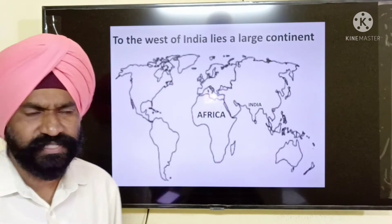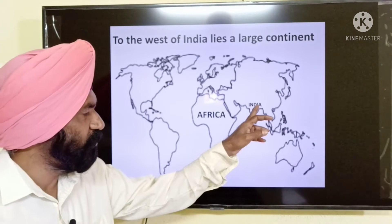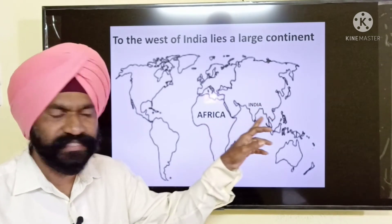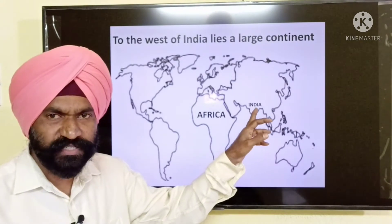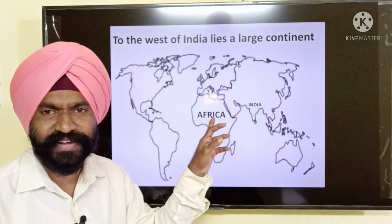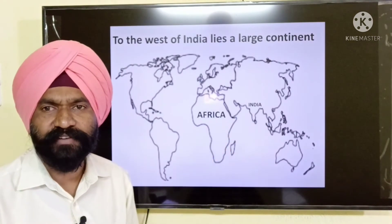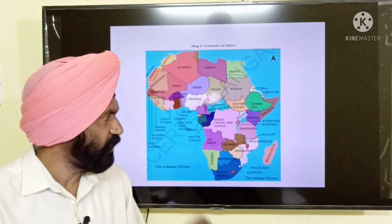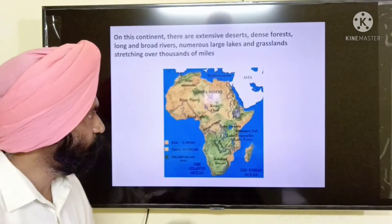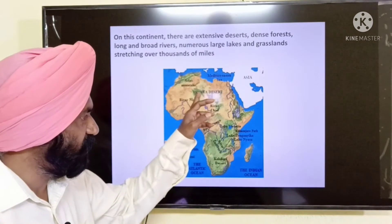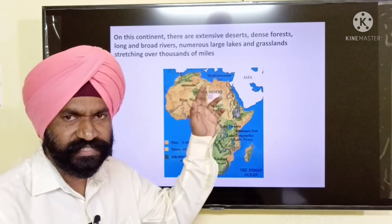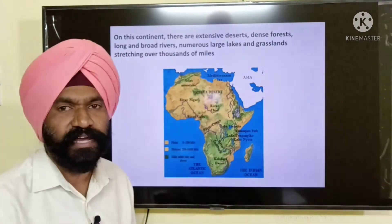Now towards the western side of India on the world map, if you can see, there is a vast continent called Africa. Towards the western side of India, there lies a huge continent called Africa. On this continent, you can see there are vast deserts in the northern side and in the southern side — the Sahara Desert and the Kalahari Desert.